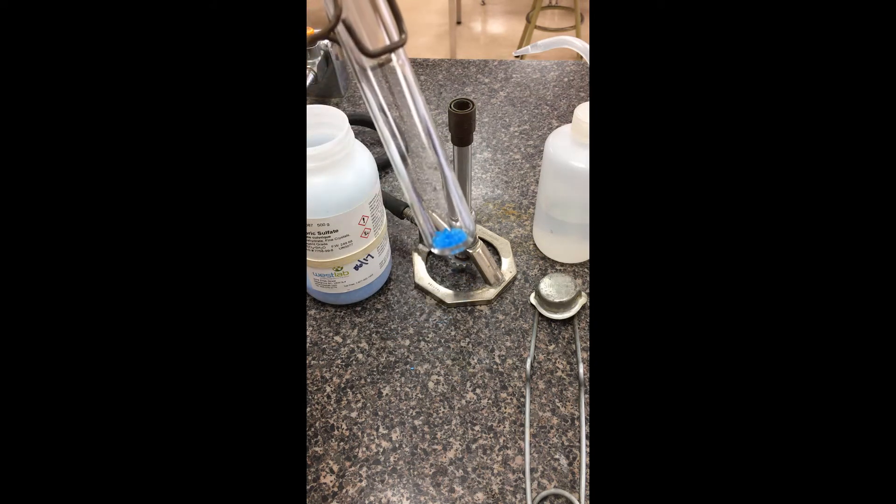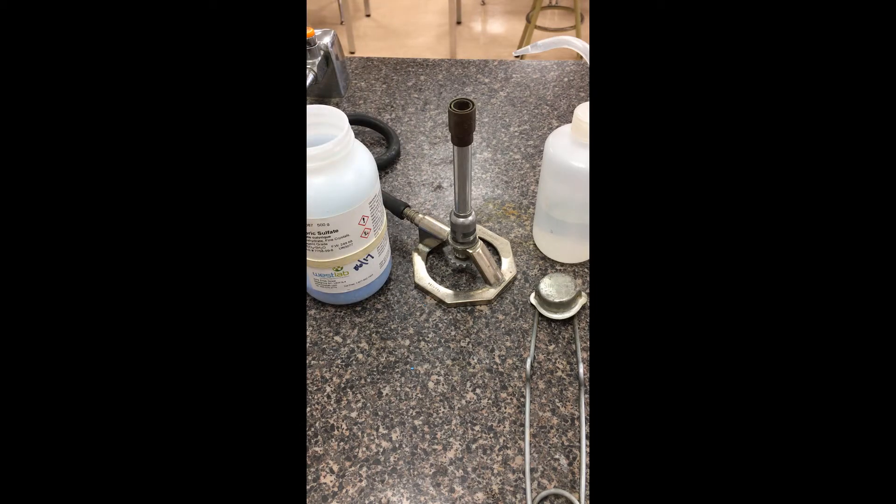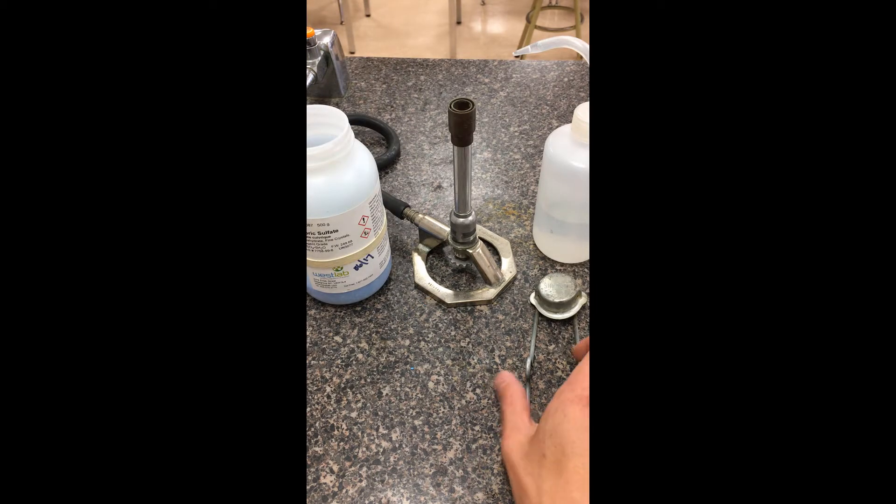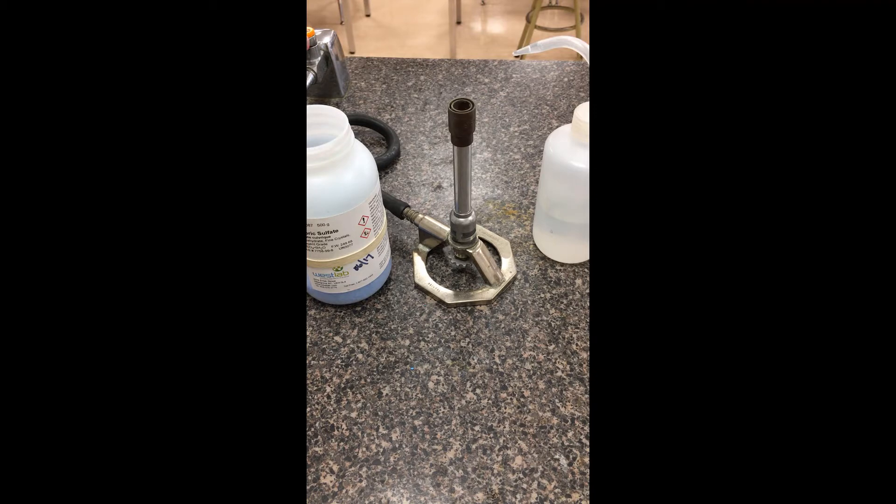What we're going to do is strike the Bunsen burner, use the heat from the Bunsen burner to try to evaporate off some of the water, and then we're going to just make some observations. For this station in particular, I want you to focus on whether this meets the criteria that we need for an equilibrium system compared to what we've learned in the chapter so far.